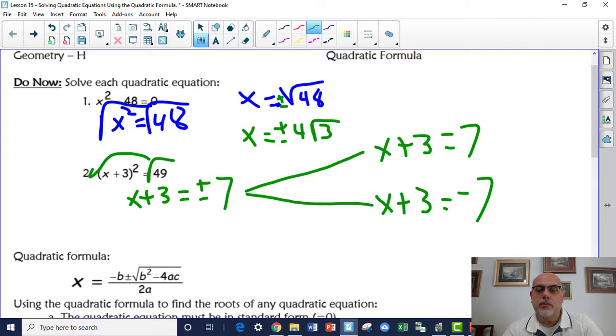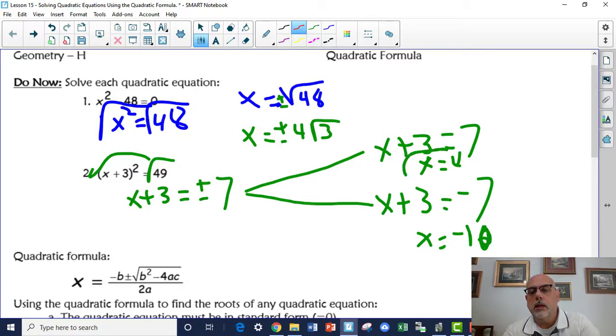The other one is x plus 3 equals negative 7. So when you move the 3 over here, you have x equals 4. And over here, x equals negative 10. So you have two answers here: x equals 4, x equals negative 10.